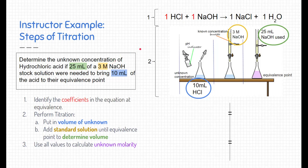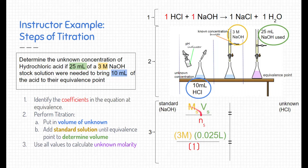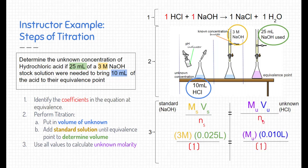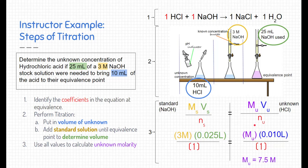Now we plug all values into the two equations for standard and unknown solutions. For the standard solution, we multiply the molarity by the volume used and divide by the mole ratio coefficient — here the coefficient for sodium hydroxide is one. For the unknown solution, we had 10 milliliters volume and a mole ratio of one. Setting both sides equal, we plug and chug into a calculator, do a little division, and the molarity of our unknown acid turns out to be 7.5 molar.